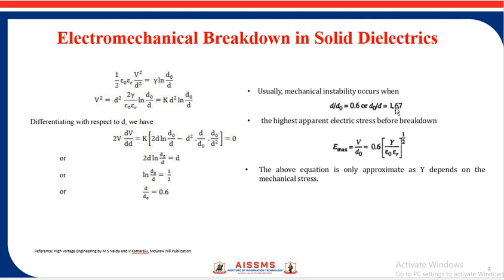This is where the mechanical instability occurs. Whenever D/D₀ is 0.6 or D₀/D is 1.67, this is the point where mechanical instability occurs.